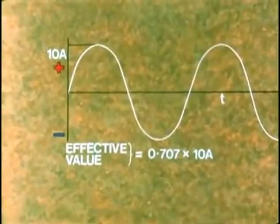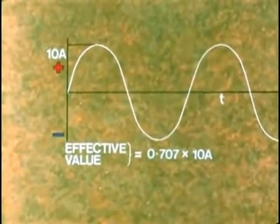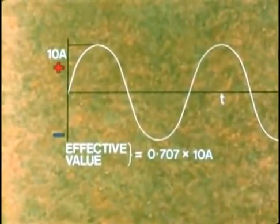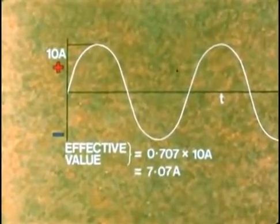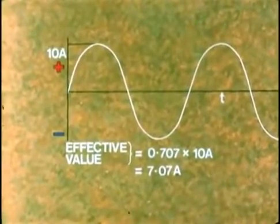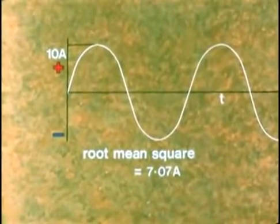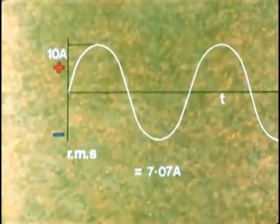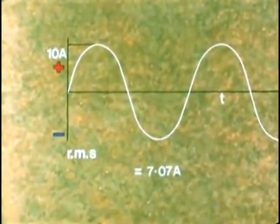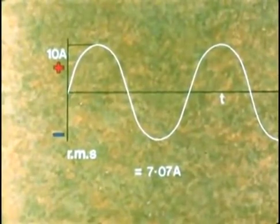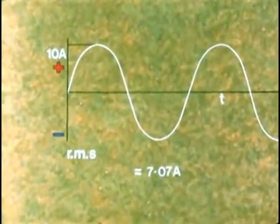For example, an AC of peak value 10 amps has an effective value of only just over 7 amps. The effective value of an AC is called the root mean square value or RMS value. So the RMS value equals 0.707 times peak value.